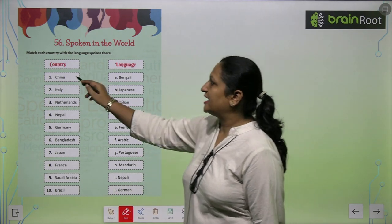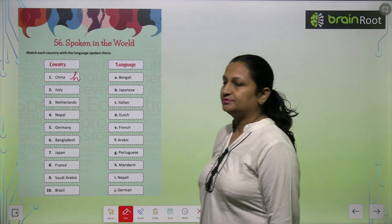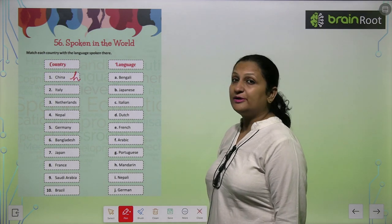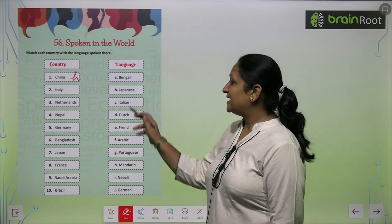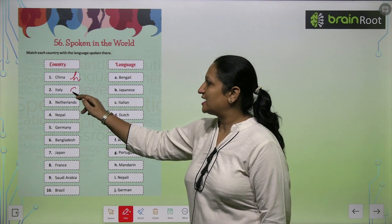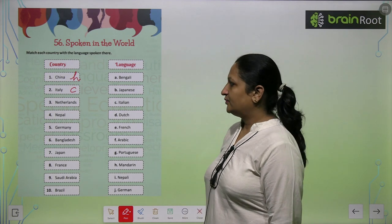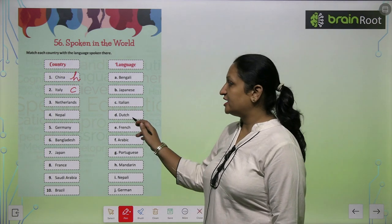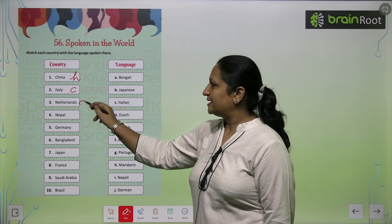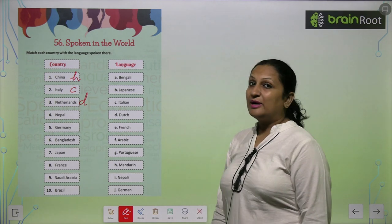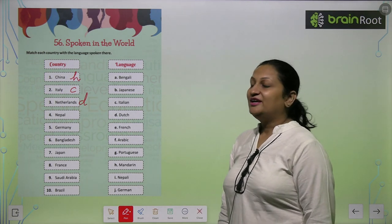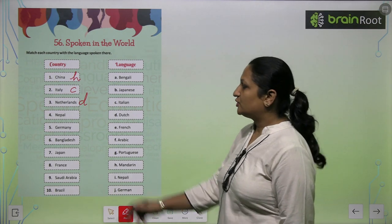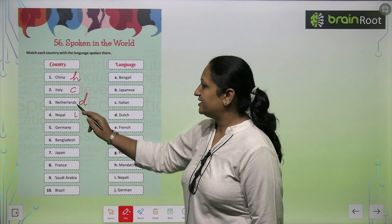Mandarin. So you will write H here. Children, see the second one — Italy. What language is spoken in Italy? That is Italian, so you will write C here. Nederland — Dutch is spoken in Nederland, so you will write D here. Nepal — what language is spoken in Nepal? Nepali. So you will write I here.